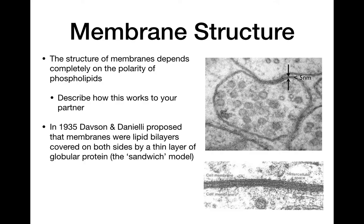The first model for cell membranes was proposed in 1935 by two scientists named Davison and Danielli. Their idea was that lipid bilayers were what membranes made. Bilayers — from the prefix bi, meaning two — so a layer of two lipids on both sides, sandwiched by proteins. That's what we call the globular protein model, and it's called the sandwich model. You can hear the name Davison and Danielli model for the IB, but if it helps, you can call it the sandwich model as well.